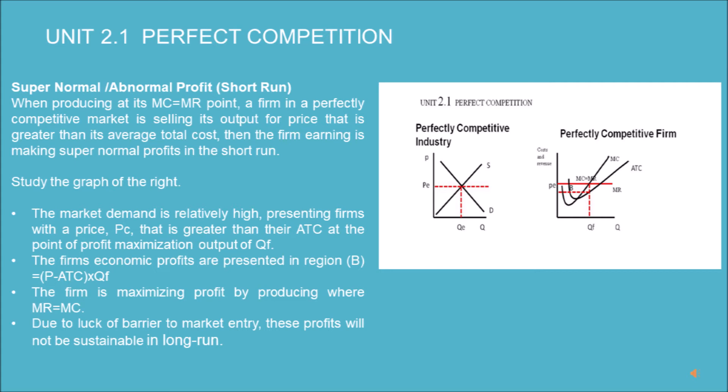Study the graph: the market demand is relatively high, presenting firms with a price P_c that is greater than the ATC at the point of profit maximization, output of Q_f. The firm's economic profits are presented in region B, equal to (P minus ATC) multiplied by Q_f. The firm is maximizing profit by producing where MR equals MC. Due to the lack of barriers to market entry, these profits will not be sustainable in the long run.